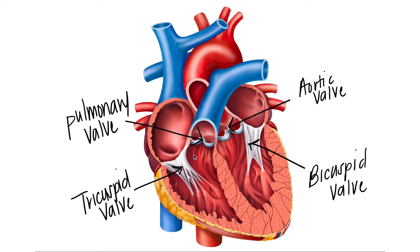Now we have the tricuspid valve — meaning three — you can see these three little flaps right here. And then we have the bicuspid valve — meaning two — and you can see these two little flaps right here. So which one of these is synonymous with the mitral valve?